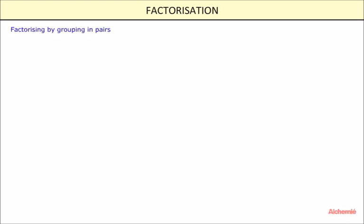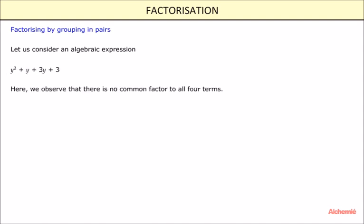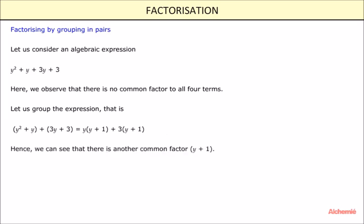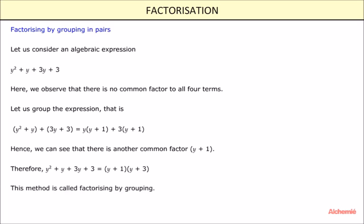Factorizing by grouping in pairs. Let's consider the algebraic expression y square plus y plus 3y plus 3. Here we observe that there is no common factor to all four terms. So we group: y square plus y plus 3y plus 3 equals y into y plus 1 plus 3 into y plus 1. We can see that y plus 1 is a common factor, therefore y square plus y plus 3y plus 3 equals y plus 1 into y plus 3. This method is called factorizing by grouping.